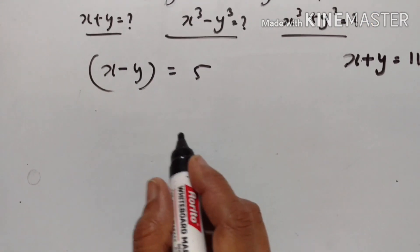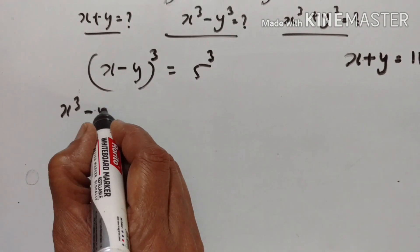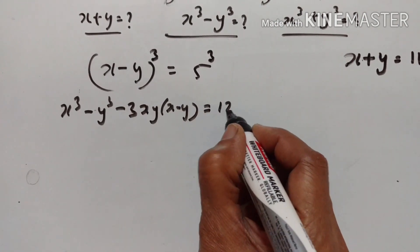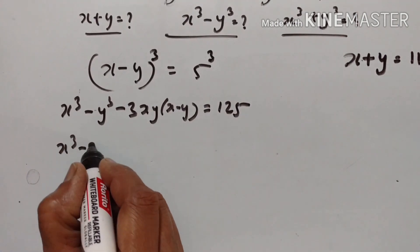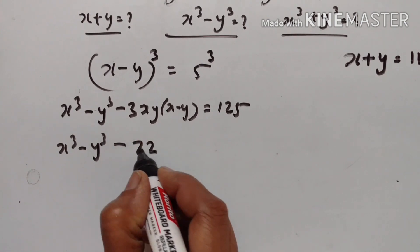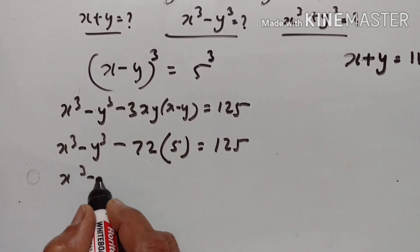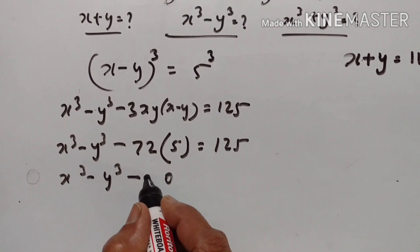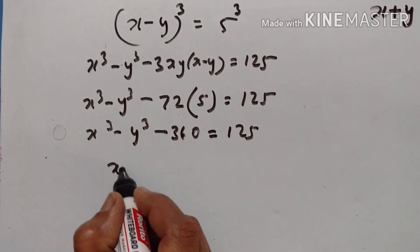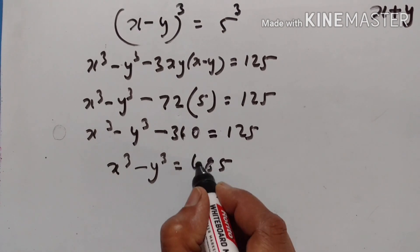Let's find x cubed minus y cubed. Since x minus y equals 5, cubing both sides: x minus y cubed equals 5 cubed equals 125. Expanding, x cubed minus y cubed minus 3xy into x minus y equals 125. So x cubed minus y cubed minus 3 into 24 into 5, that is 360, equals 125. Therefore x cubed minus y cubed equals 125 plus 360, which is 485.